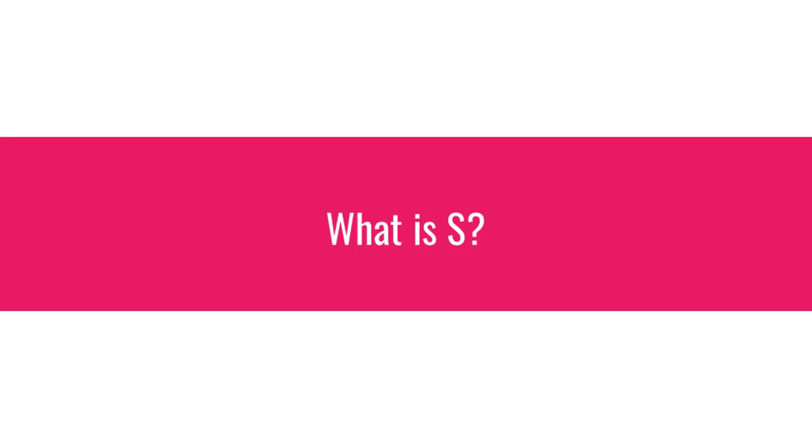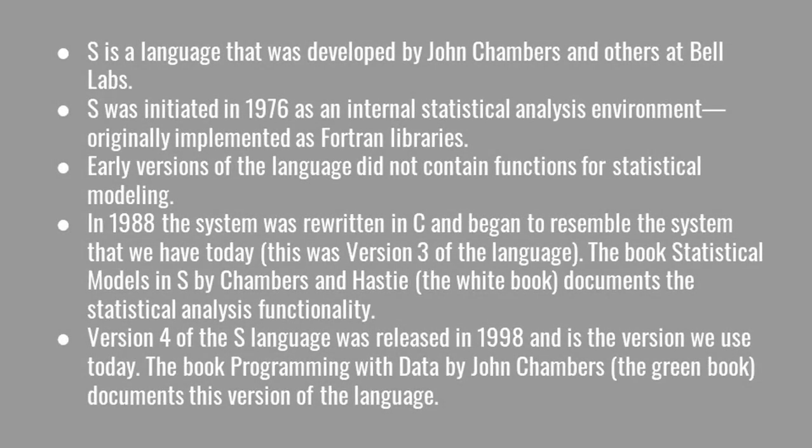S is a language that was developed by John Chambers at the now defunct Bell Labs. It was initiated in 1976 as an internal statistical analysis environment — an environment that people at Bell Labs could use to analyze data. Initially it was implemented as a series of Fortran libraries to implement routines that were tedious to repeat. Early versions did not contain functions for statistical modeling; that did not come until roughly version three. In 1988, the system was rewritten in C to make it more portable across systems, and it began to resemble the system we have today.